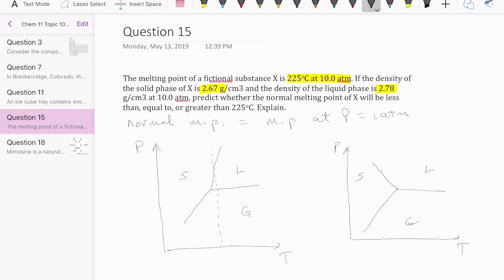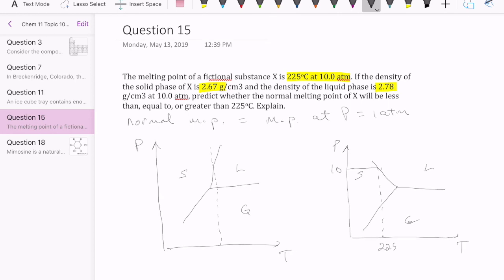Let me add in a couple more information that we need here. We were told that at 10 atmospheres, we have a temperature of 225. And we're trying to figure out whether the normal melting point would be less than, equal to, or greater than 225. Normal means pressure of one atmosphere, which is a lower value than 10. So let's say this is one. What I want to know is what's my melting point right here? The melting point is the point where the pressure intersects with that solid-liquid equilibrium line, which is this line right here.